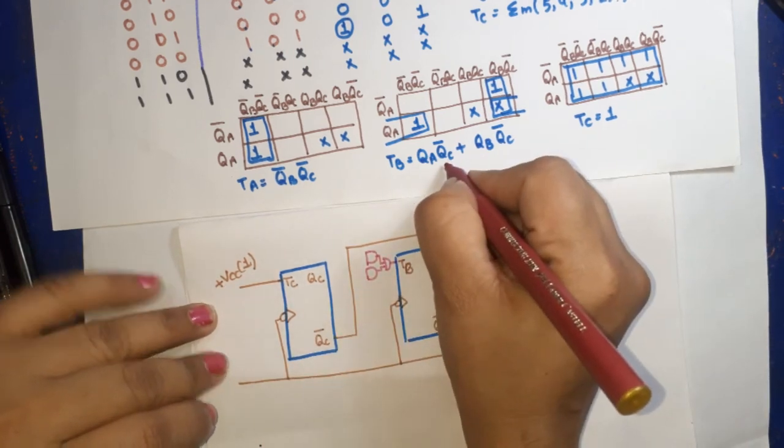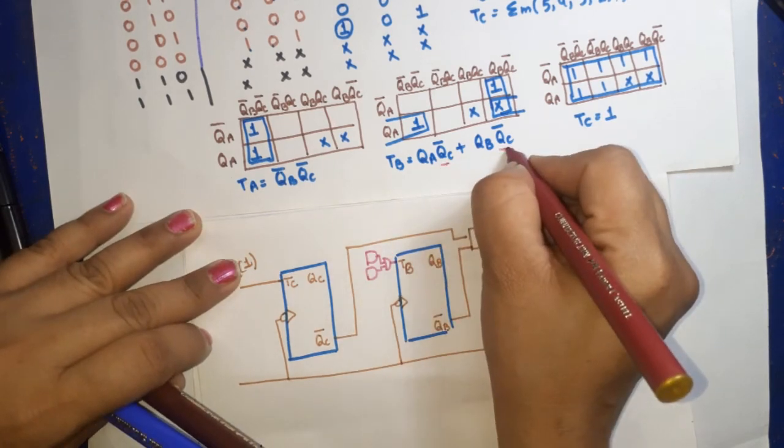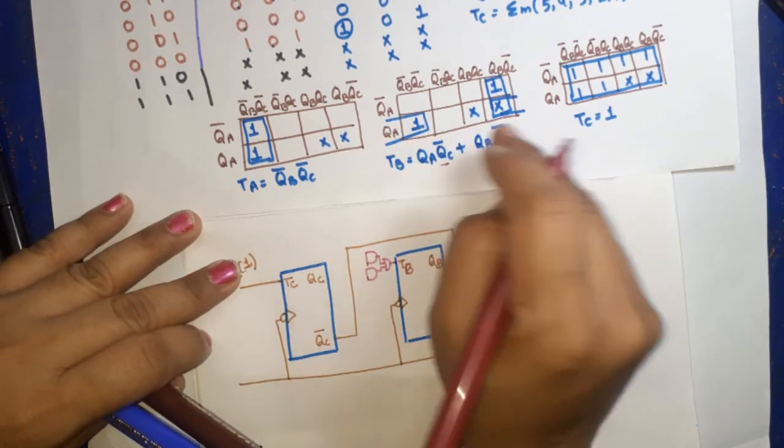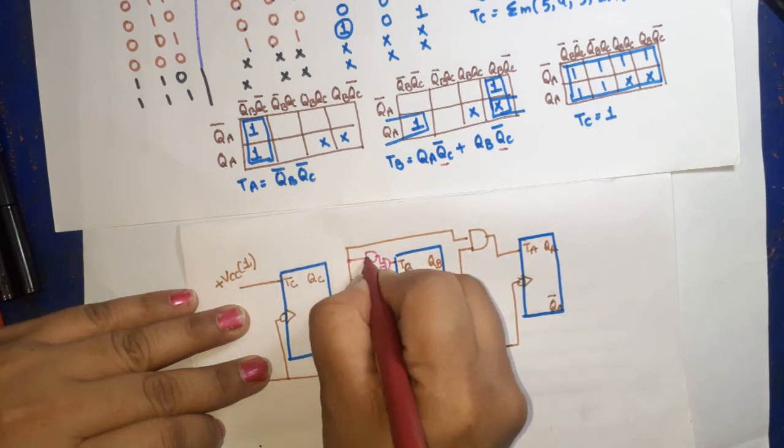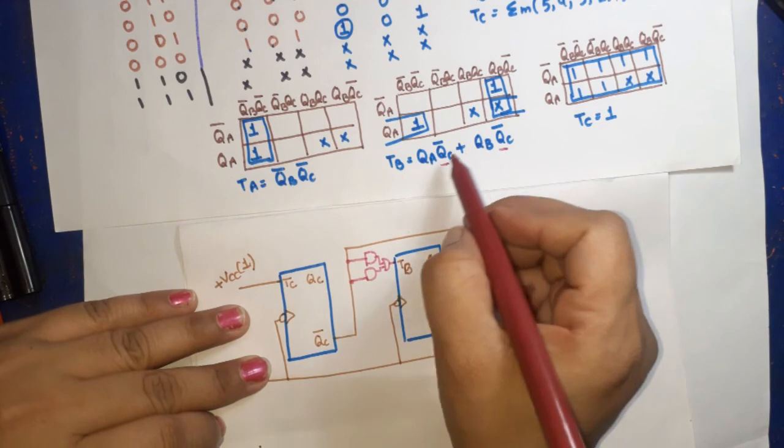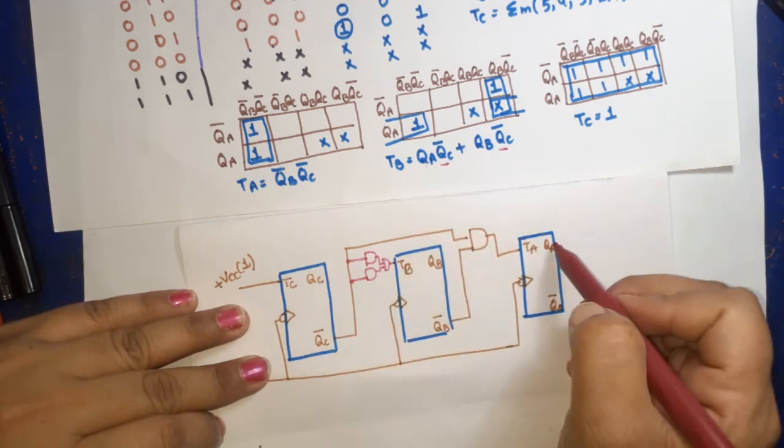Here QC bar is common, so we connect this QC bar here and here. Now one will connect with QA, one will connect with QB. I have connected QA with the first gate. Now for QB, I use a different color. I have added QB feedback.